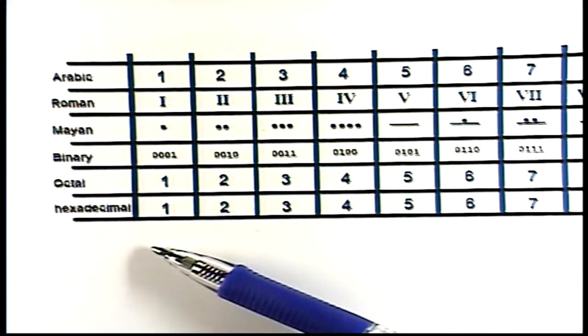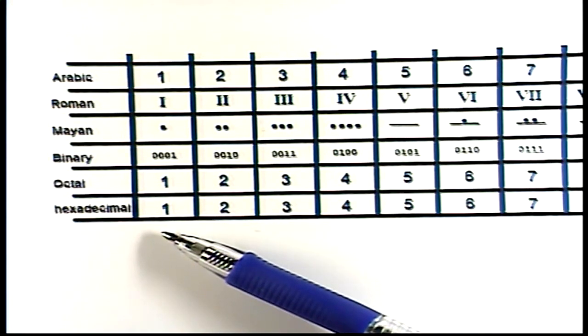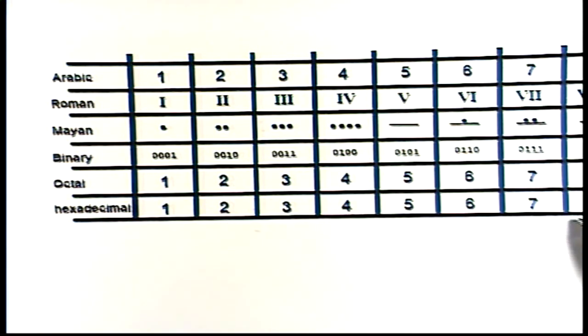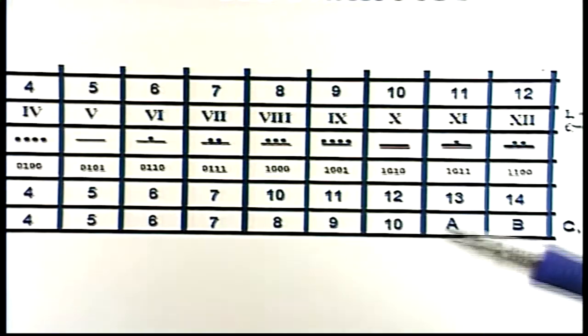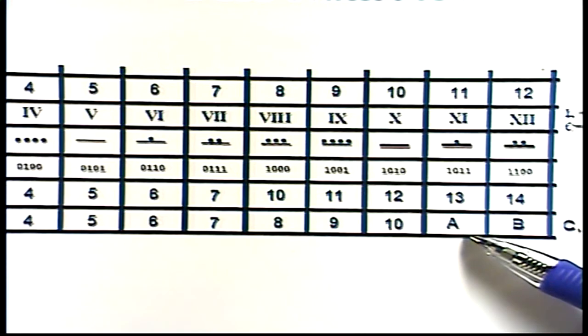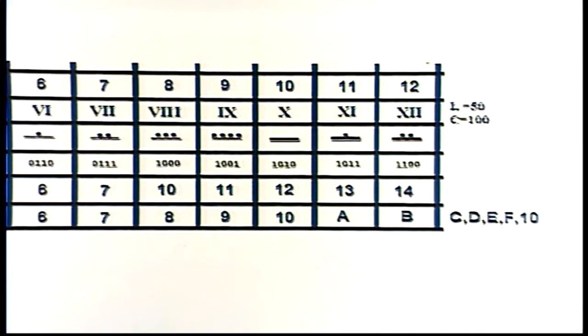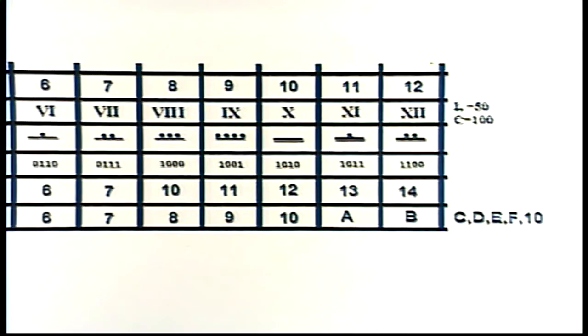In hexadecimal, it's very similar to what we have in our base ten Arabic system. It goes one, two, three, four, five, six, seven, eight, nine, ten, eleven, twelve. But when you get to eleven, it goes A. And then twelve is B. And it goes C, D, E, F. And when you get to that one, the next one would be ten. Because this is a sixteen base number system.